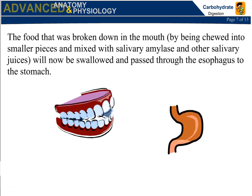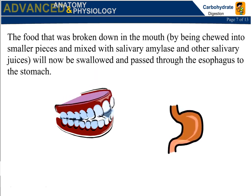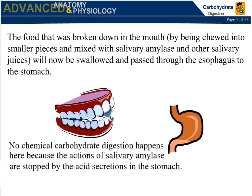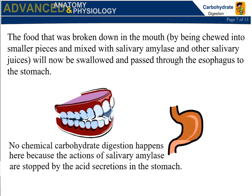The food broken down in the mouth — chewed into smaller pieces and mixed with salivary amylase and other salivary juices — will be swallowed and passed through the esophagus to the stomach. No chemical carbohydrate digestion happens here because the actions of salivary amylase are stopped by the acid secretions in the stomach.